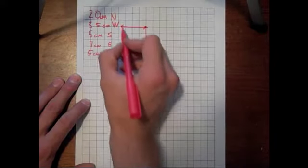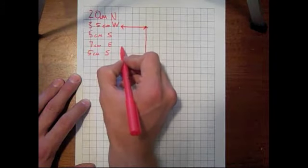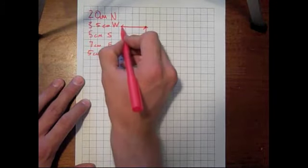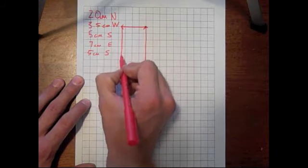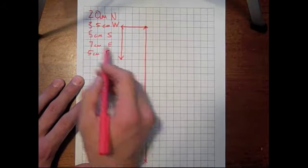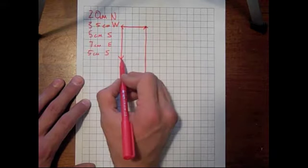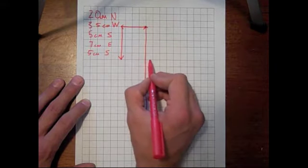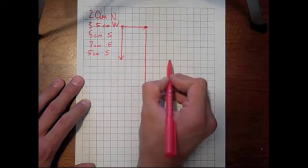And then from there, we're going to draw 5 centimeters south, so 1, 2, 3, 4, 5. And then from there, we're going to go 7 centimeters to the east, so 1, 2, 3, 4, 5, 6, 7.